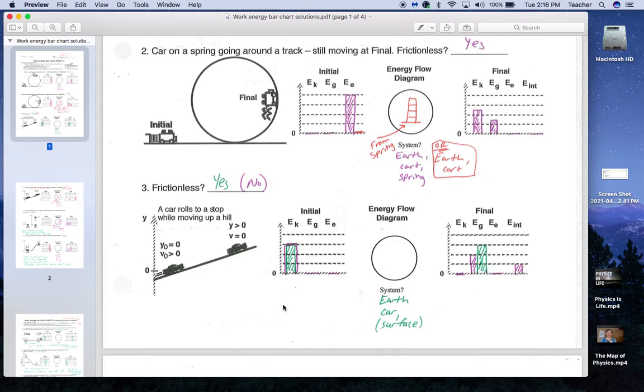If there is friction, and I have Earth, cart, and the surface as my system, then some of that gravitational energy is going to go into internal energy. I'd have less gravitational energy, and that just means that the car wouldn't go as high.